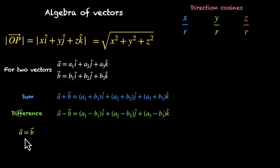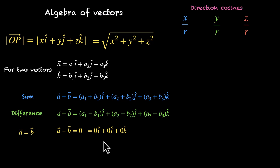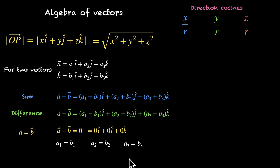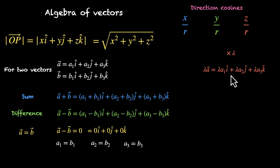Two vectors are equal when their difference is the zero vector, meaning all corresponding components are equal: a1 = b1, a2 = b2, and a3 = b3. For scalar multiplication, multiplying a vector by λ multiplies all components: λa = λa1 i-cap + λa2 j-cap + λa3 k-cap. So doubling a vector doubles all its components, and multiplying by 10 multiplies all components by 10.